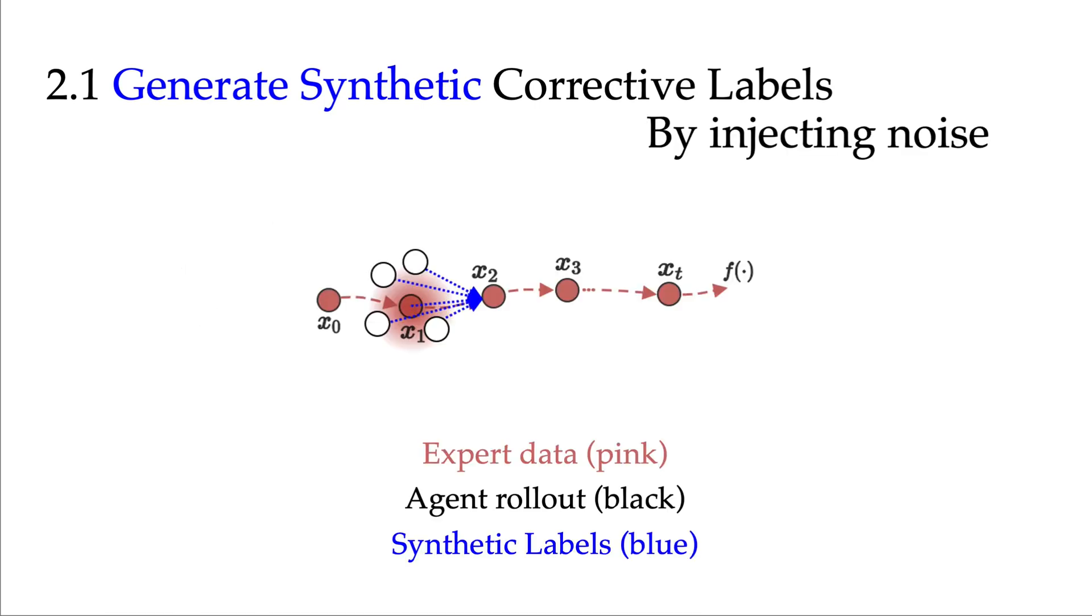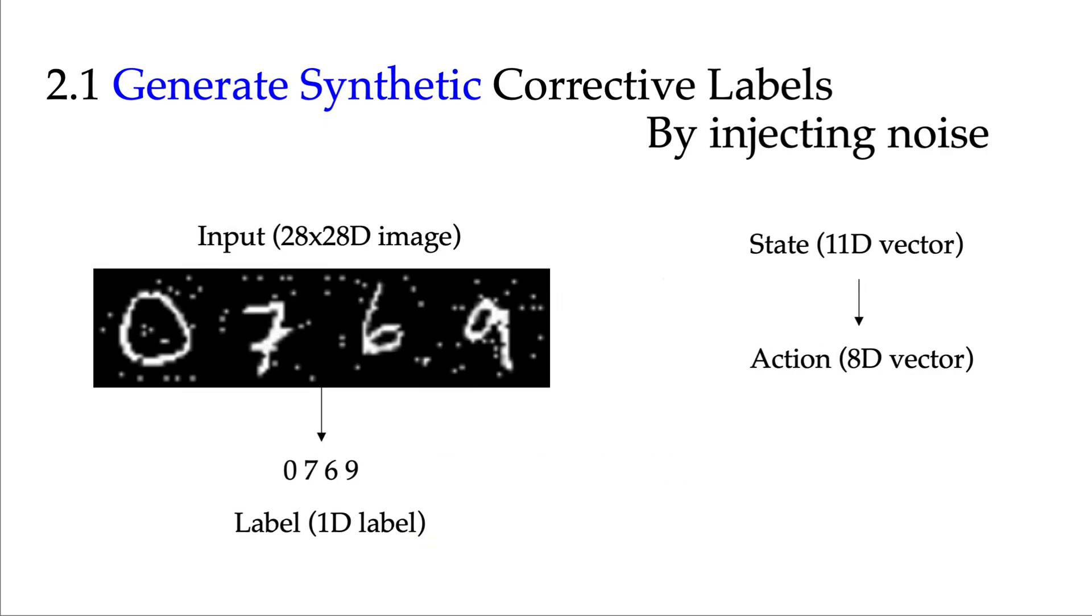First, the noise injection. We propose to sample random states around the collected state and reuse the collected action as label. This idea is not new. A lot of research has been injecting noise to input and reuse the output label. For example, an image recognition task. But note that the mapping is compressing a high-dimensional image to a low-dimensional label, so it's easy to see that even after we inject noise, the label would still hold and remain optimal. But for our problem, we're learning a mapping from a low-dimensional space to another low-dimensional space. We actually cannot guarantee that for a randomly sampled state, the old action label can still work. Nevertheless, we propose to reuse action.